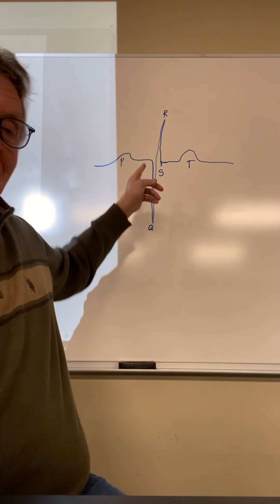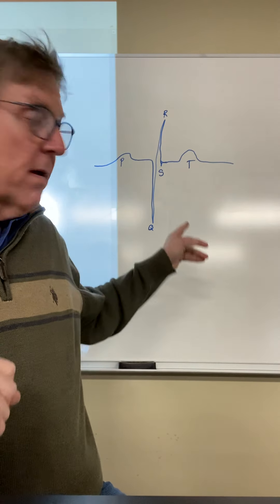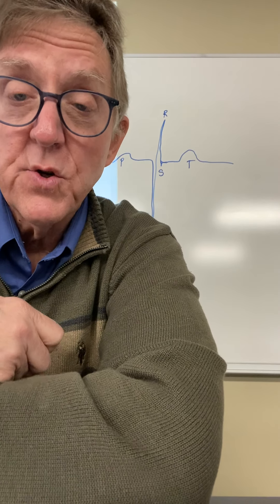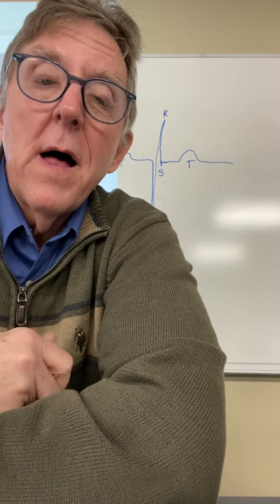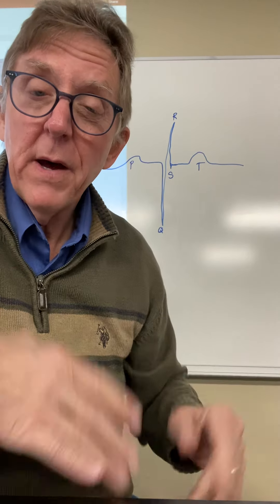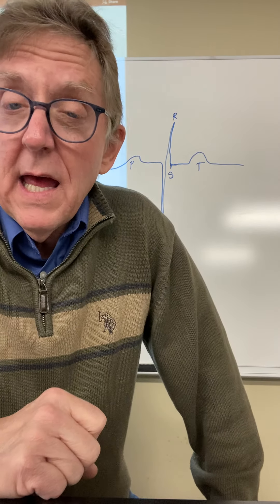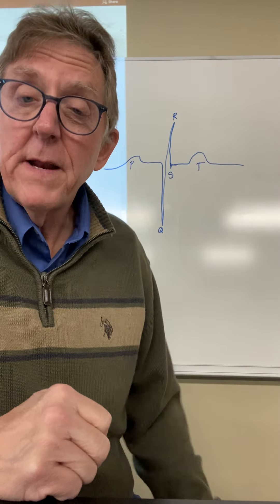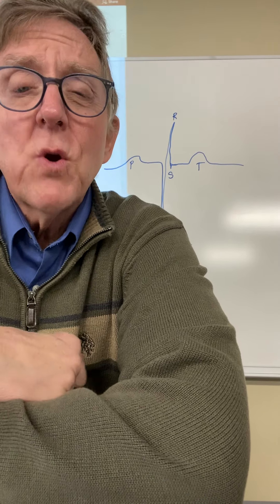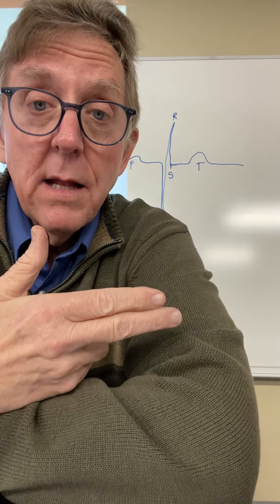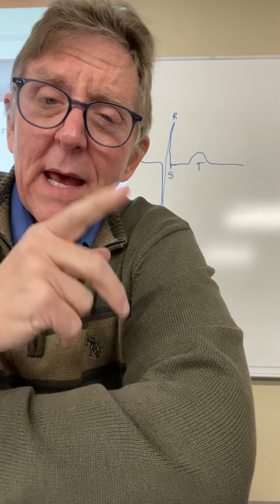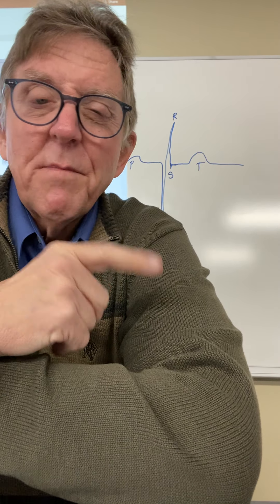Okay, we're back. I've drawn this thing on the board, and it repeats. This is just one signal from a heart contracting. You'll hear this called an EKG or an ECG — electrocardiogram with a C, but in German it's a K. What we're talking about is a measurable electrical impulse from your heart, and you can detect it by putting electrodes on your body. We'll be doing this in lab.